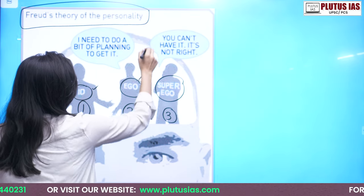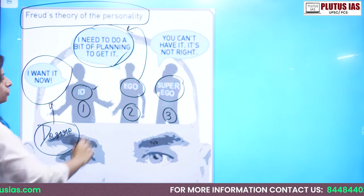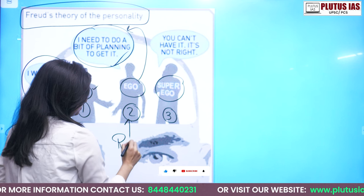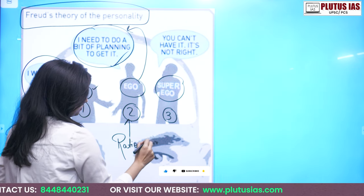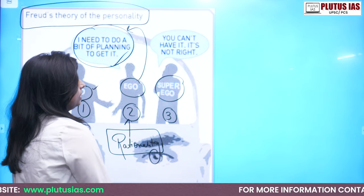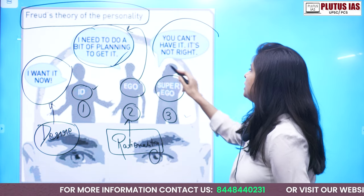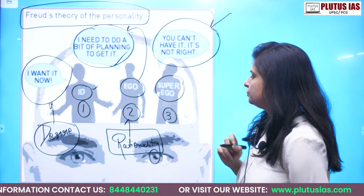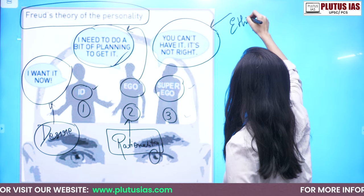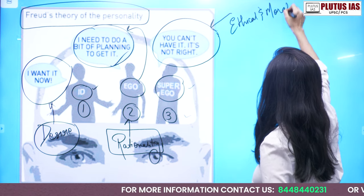The second is ego, which says 'I need to do a bit of planning to get it.' So you can say this is talking about rationality. The third component of Freud's theory of personality says 'you can't have it, it's not right.' So what you can say is that super ego is talking about ethical and moral perspectives.